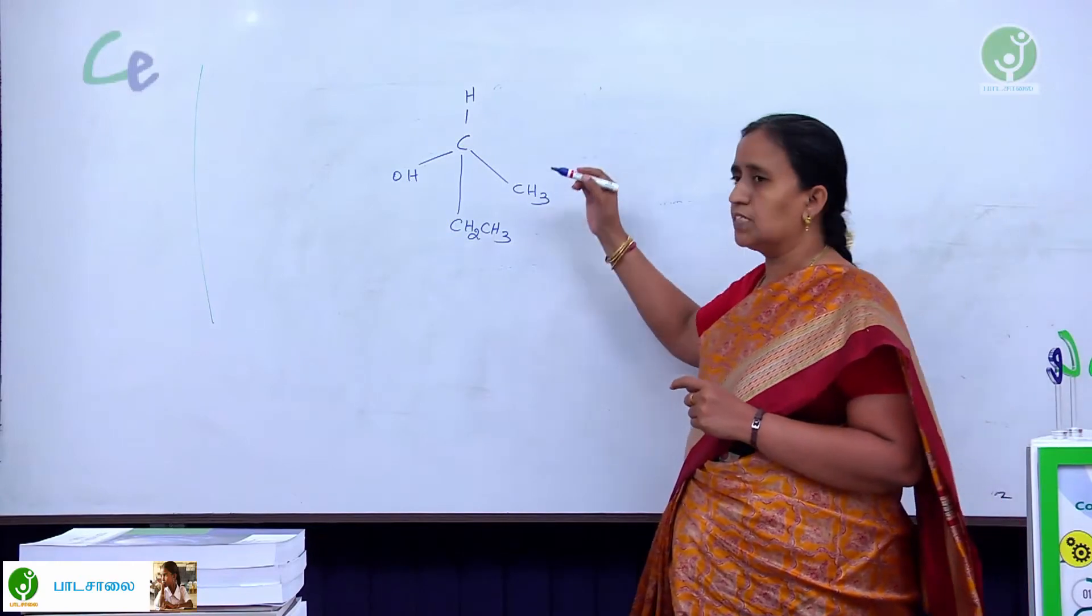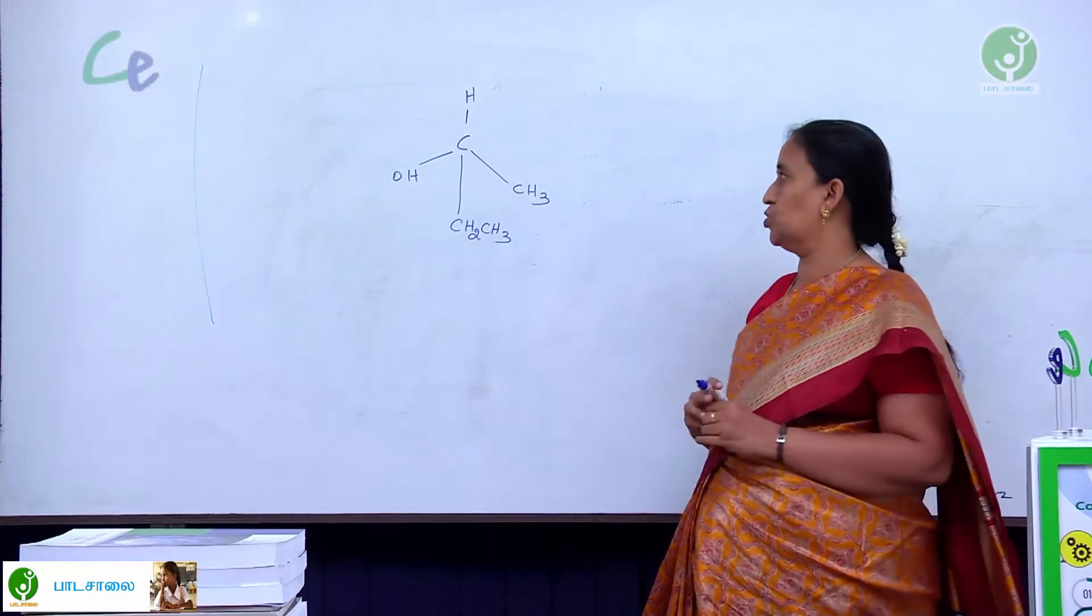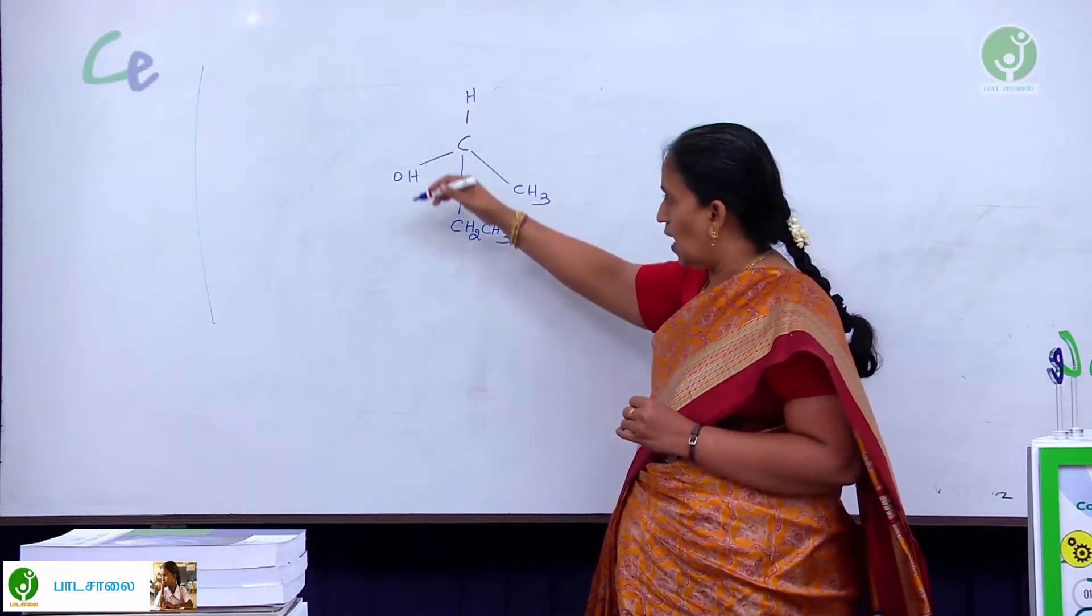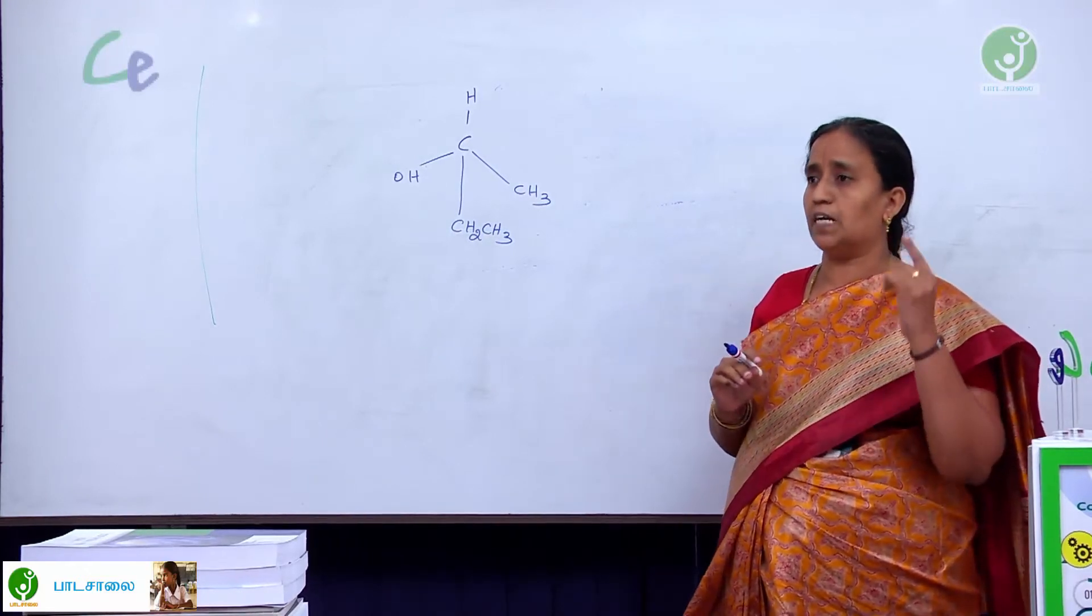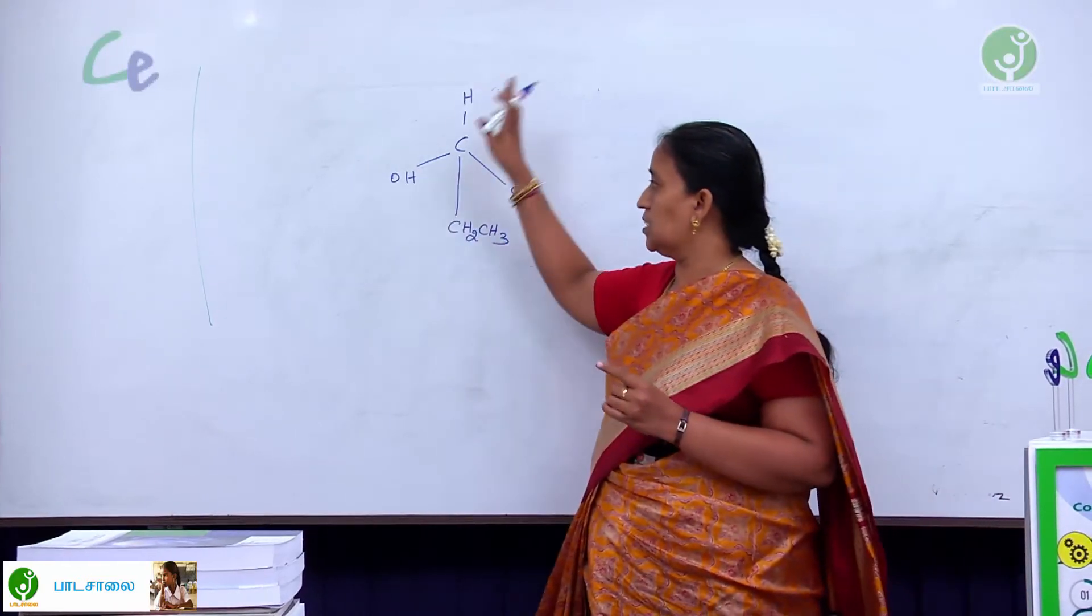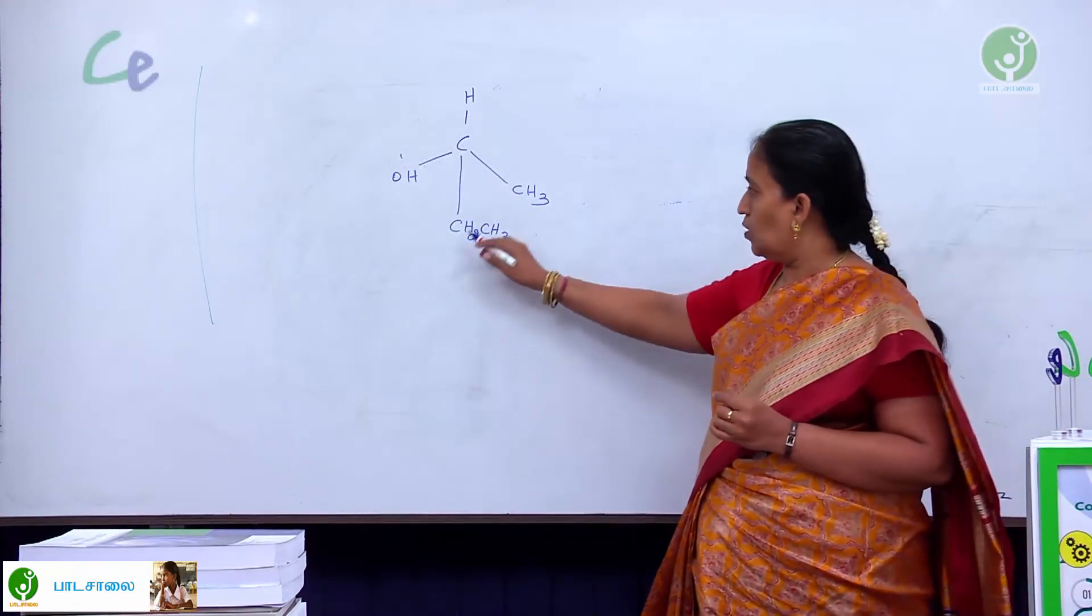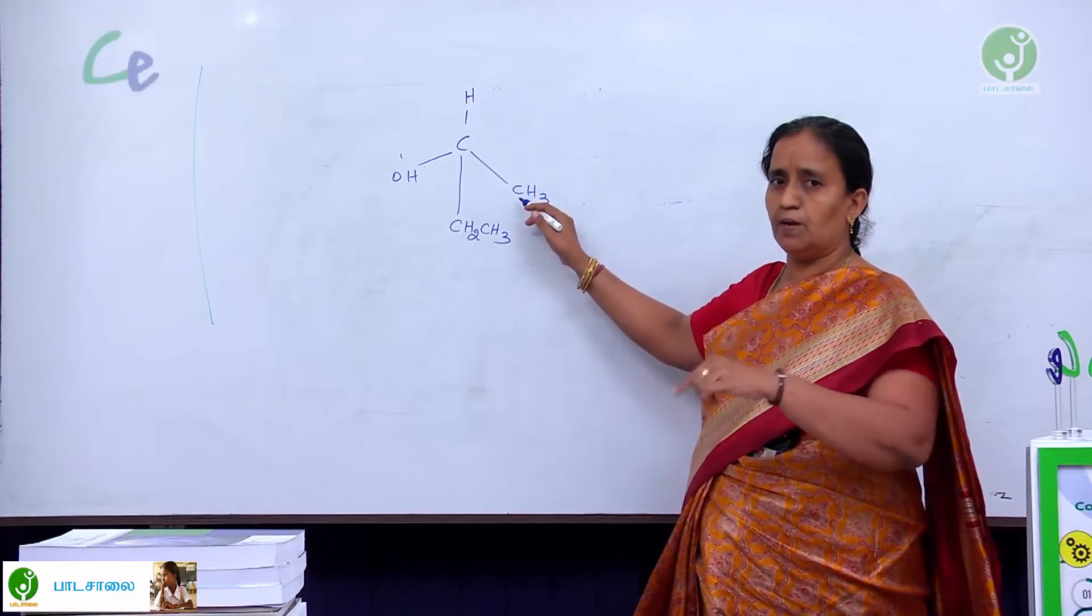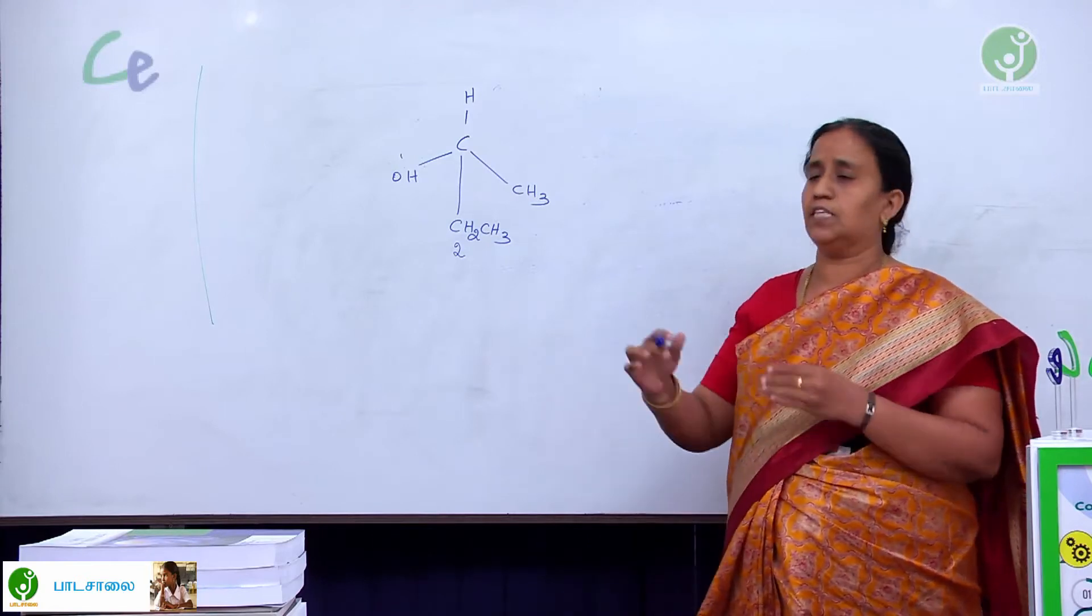Now, I am going to assign whether this is optically positive isomer or optically negative isomer. How we are going to assign? Take a compound. Now, assign priority for these four groups based upon the atomic number. Tell me which is having higher atomic number? Oxygen is having the higher atomic number. Now, next is both are carbon-carbon. Now, assign the priority among methyl and ethyl. Ethyl is having the higher priority than methyl group.